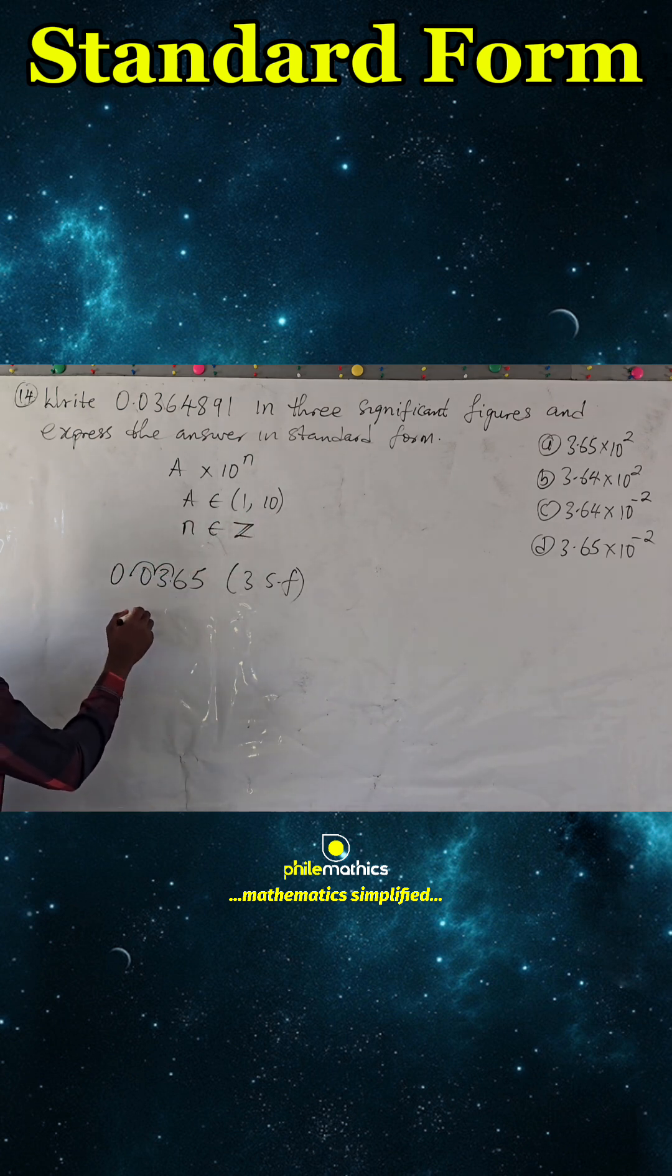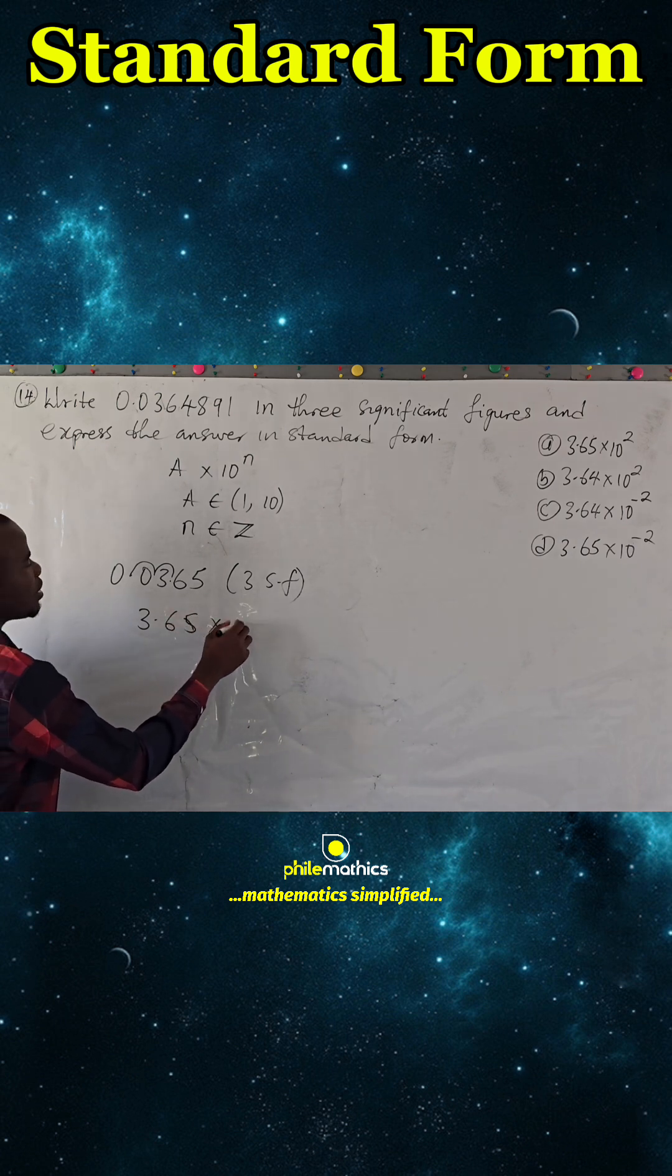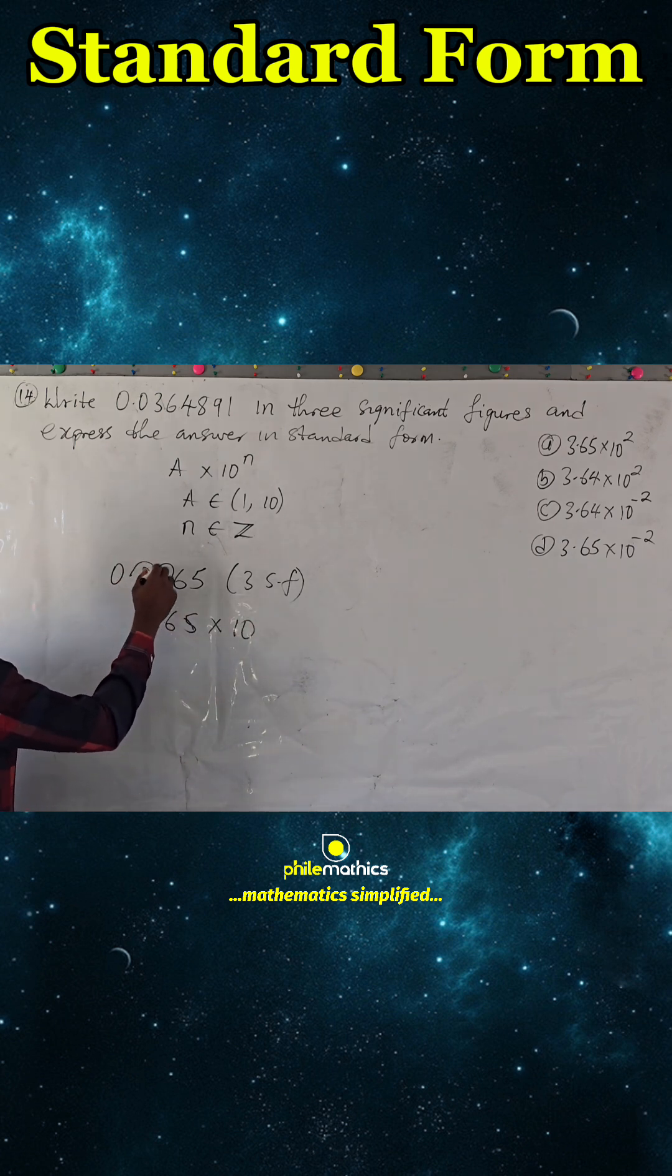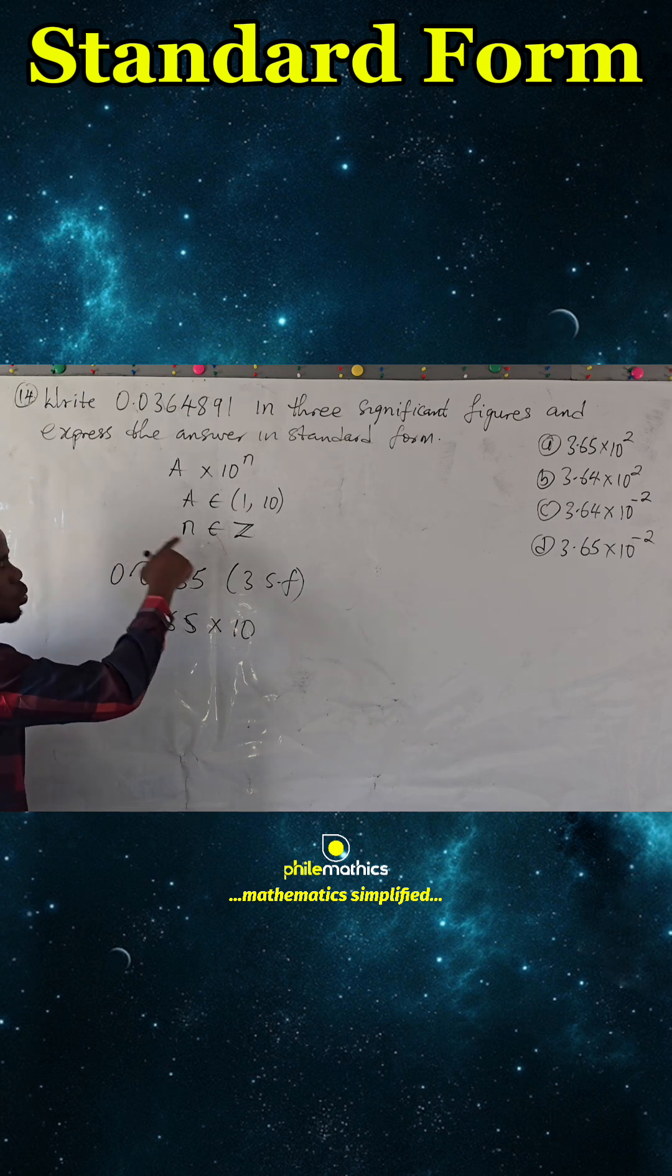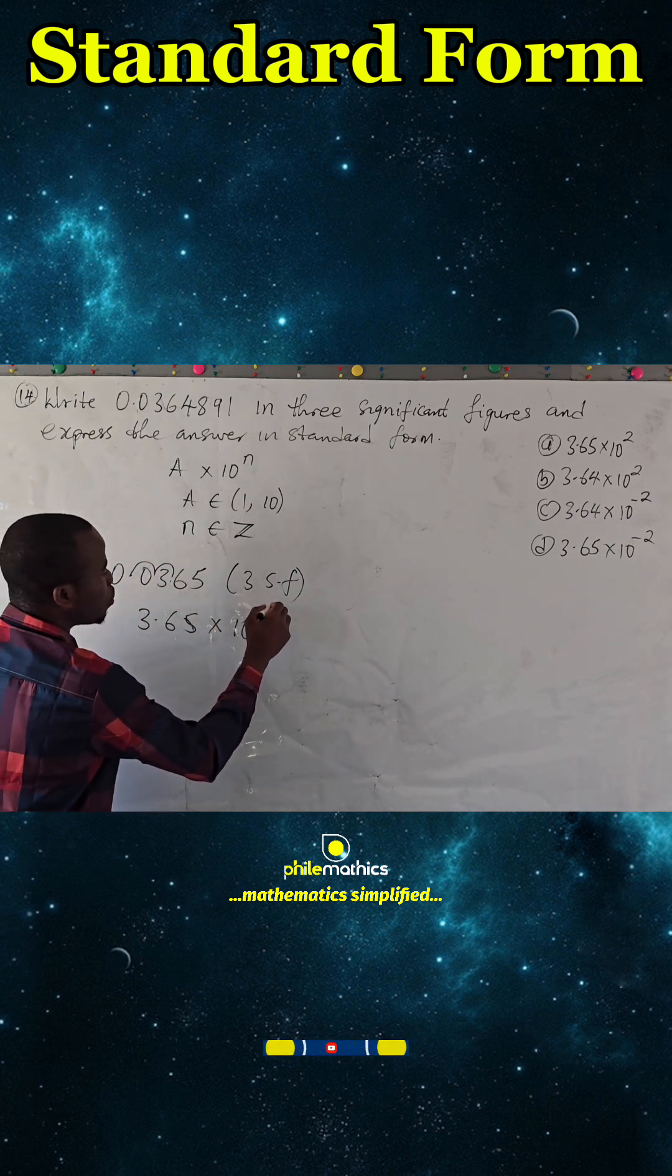One and ten. So it is 3.65 times 10. How many times do we move? Two times. We move from left to right, so it's negative: minus two.